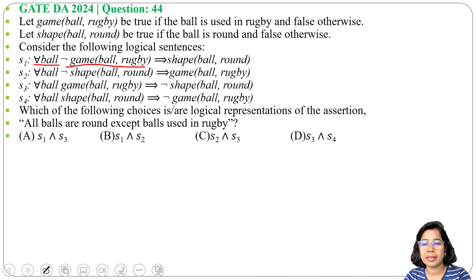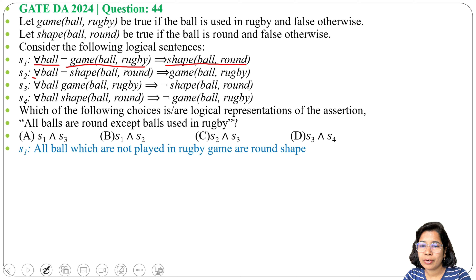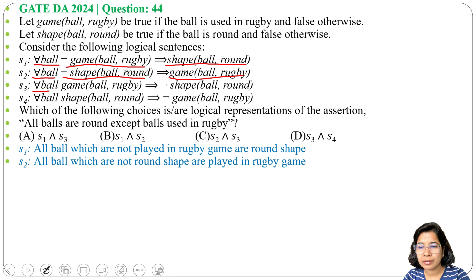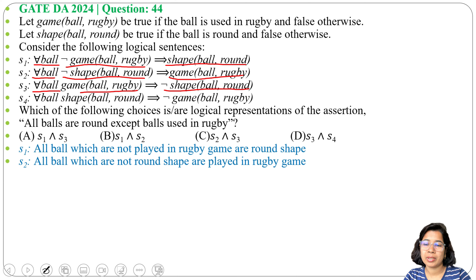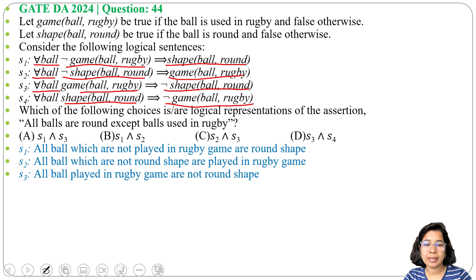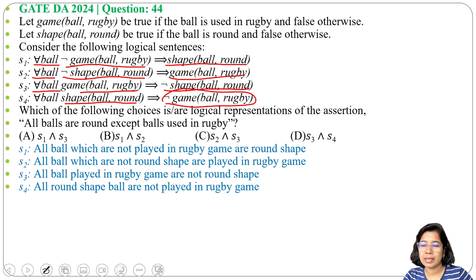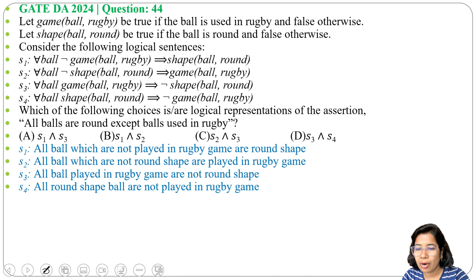S1: For all balls, if that ball is not played in game rugby, then that ball's shape is round. S2: For all balls, if the ball is not round, then that ball plays in the rugby game. S3: For all balls, if that ball is played in the game rugby, then it is not round. S4: For all balls, if it is round, then it is not played in the game rugby. We need to analyze each sentence, then check the options.